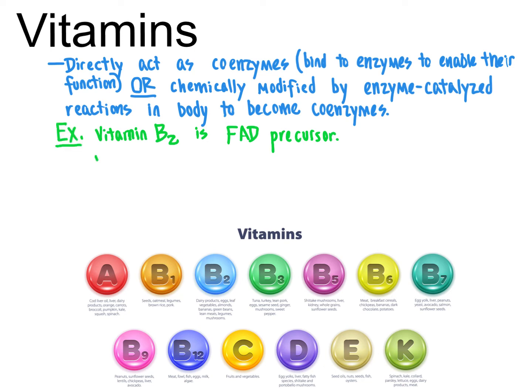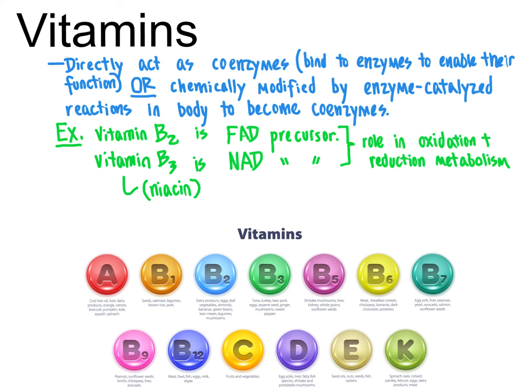Vitamin B3, another one of the B vitamins, also known as niacin, is a precursor to NAD, and as a precursor to NAD and related molecule NADH, it is also ultimately involved in oxidation and reduction reactions that are prevalent in a variety of metabolic processes.